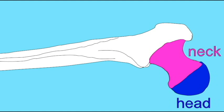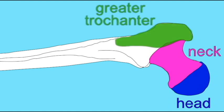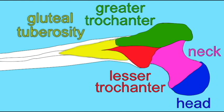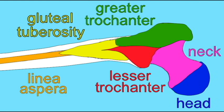Further distal to this are two large bony processes for muscle attachment: the greater and lesser trochanters of the femur. Distal to this there is a v-shaped roughened region known as the gluteal tuberosity, where the gluteus maximus attaches, and then there is a sharp ridge running down the posterior side of the femur known as the linea aspera, to which the adductor muscles attach.